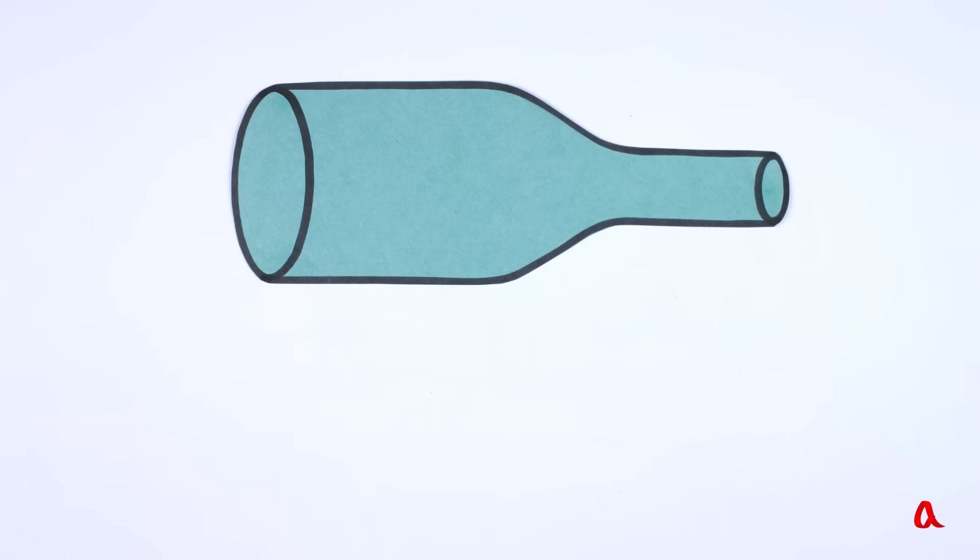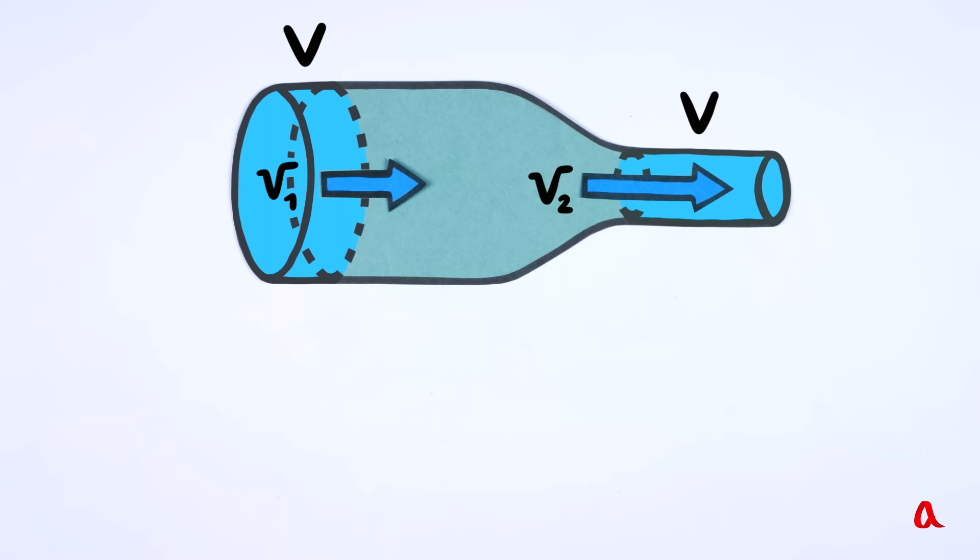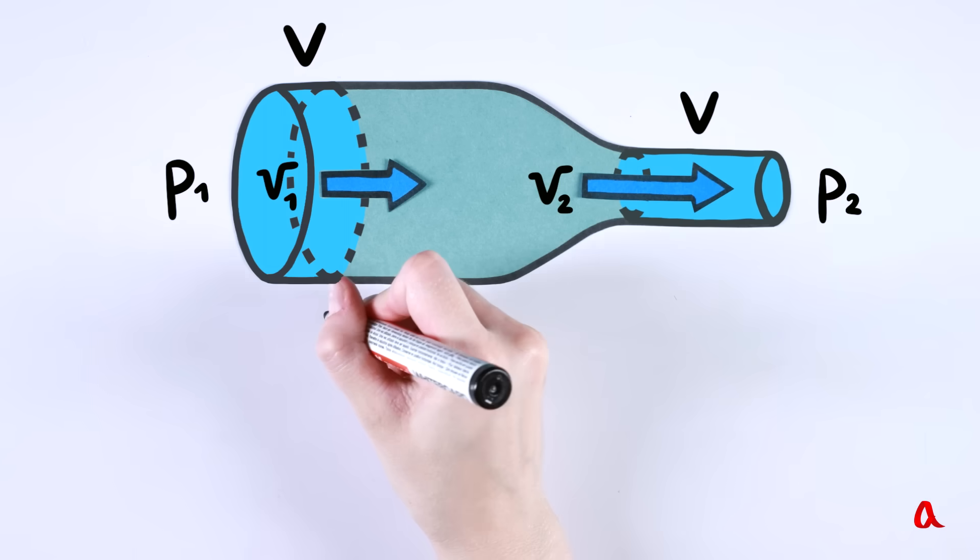Let us consider water flowing inside a cross-section pipe. The volume of water V enters the pipe from the left end and leaves the pipe on its right end. The difference of pressures at the ends of the pipe does mechanical work, which equals P1 minus P2 multiplied by V.